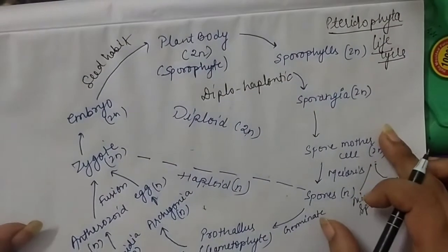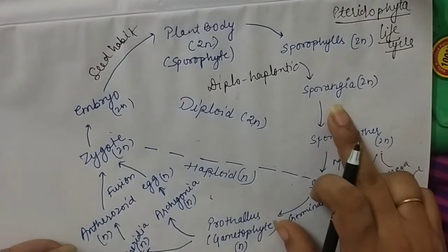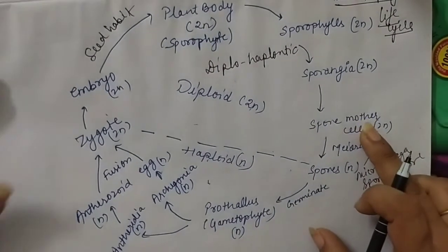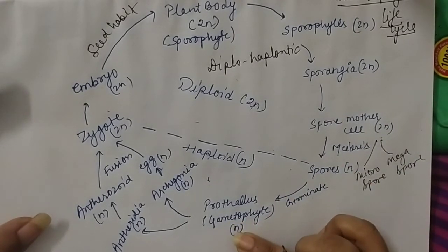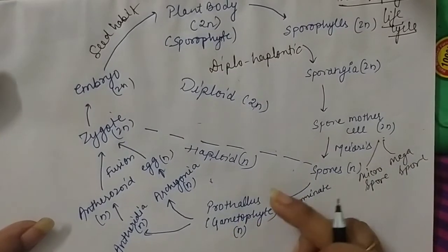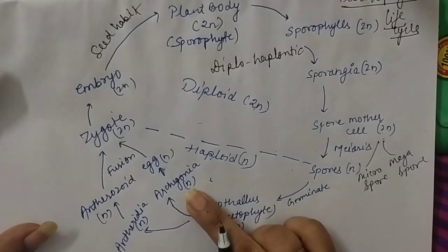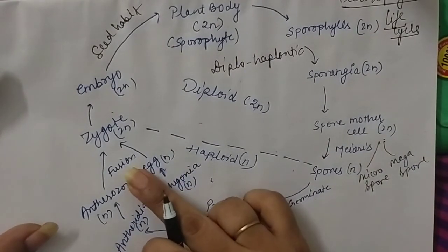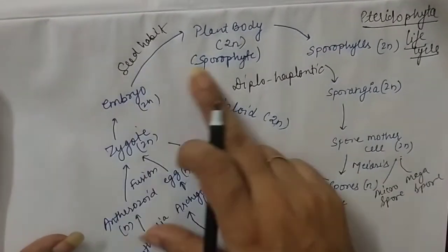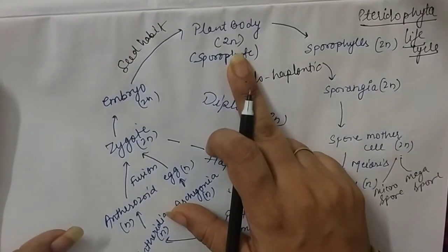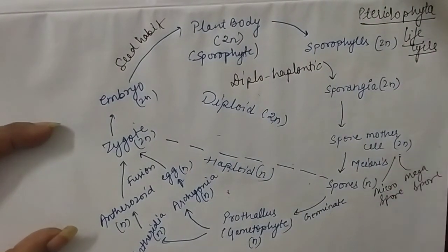To summarize the life cycle of Pteridophyta: the main plant body has sporophylls containing sporangia; sporangia have spore mother cells which by meiosis produce spores; spores germinate to give rise to the prothallus, which is the gametophytic condition. On the prothallus, antheridia and archegonia are present, producing male and female gametes. In the presence of water, gametes fuse to form the zygote, which develops into an embryo and then the main plant body. Next time we will discuss Gymnosperms. Goodbye, have a beautiful day.